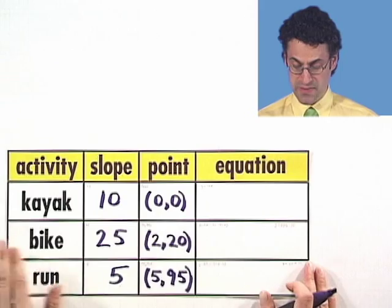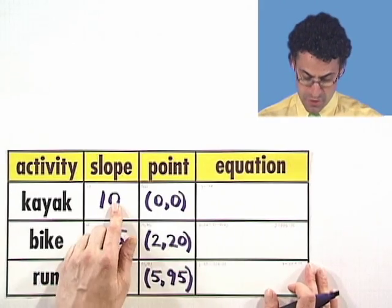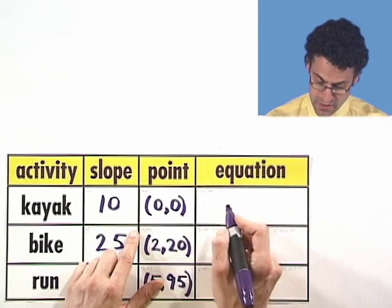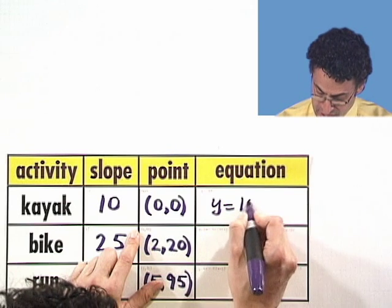So now, putting all this together, we can actually find the equation for each of these lines, slope and a point. So we know, for example, here, this is just y equals 10x.